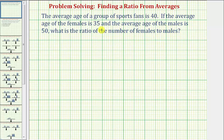So for review, to find the average age of a group, we would sum their ages and divide by the number of people.